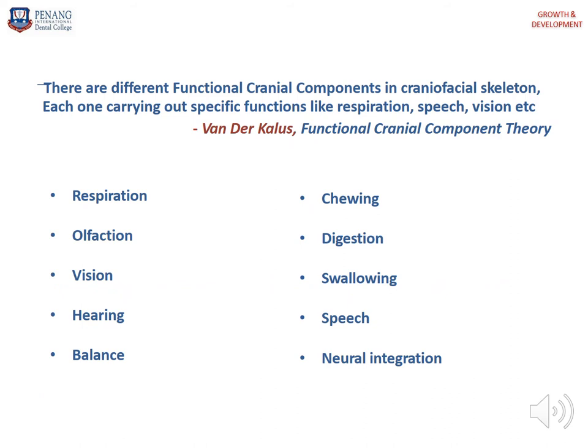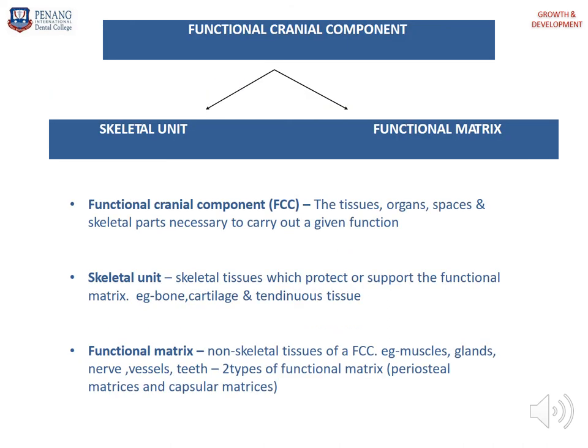Another scientist, Van der Klaauw, suggested there are different functional cranial components, each carrying out specific functions like respiration, speech, vision, chewing, deglutition, swallowing, and neural integration. Moss suggested that the head simply represents a region where specific functions are carried out by functional cranial components. The functional cranial component consists of two elements: the skeletal unit and the functional matrix. The skeletal units are all the bones, cartilage, and tendons that support these functions, while the functional matrix represents all the tissue, organs, and spaces that perform a given function.